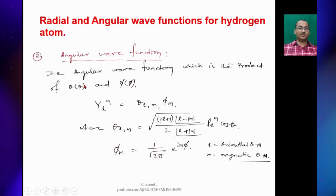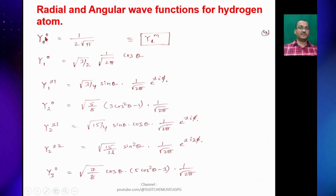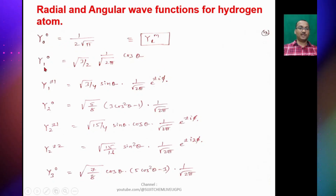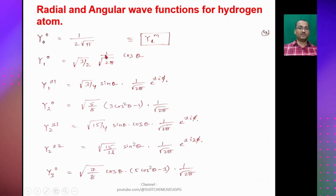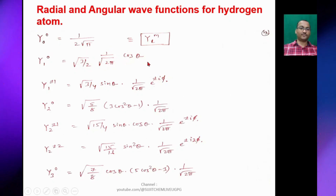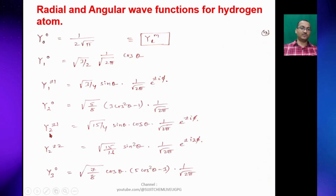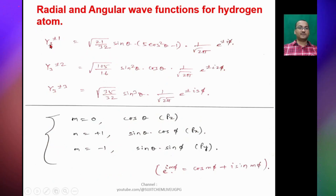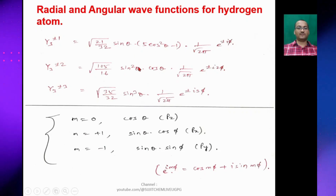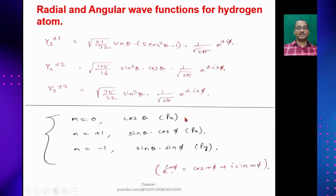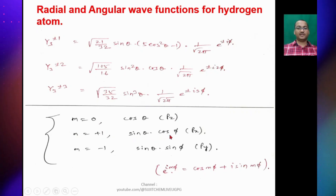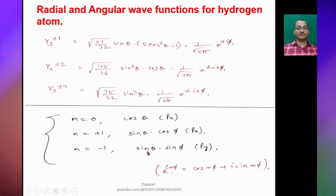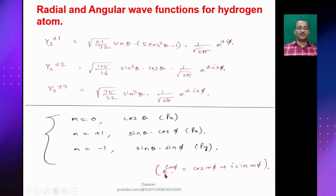The solved angular wave function values are: Y₀₀ = 1/(2√π); Y₁₀ = √(3/2) · (1/√2π) · cosθ. For p orbitals: when m = 0, the angular part is cosθ giving p_z; m = +1 gives sinθ cosφ giving pₓ; and m = −1 gives sinθ sinφ giving p_y. Also, e^(imφ) = cos(mφ) + i·sin(mφ).